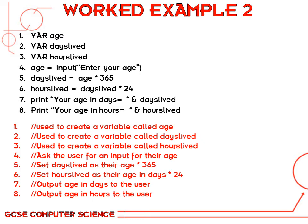So one variable for age — that's what the user is going to input. One for days left — that's going to be part of the calculation. And one for hours left. On line four, this is going to be the input, very similar to what we did before. The variable called age equals input, and the user will see 'Enter your age' on the screen and type it in. Once they've input the age, we multiply that by 365 and allocate it to the variable called days left. Then we times days left by 24 and allocate that to the variable called hours left.